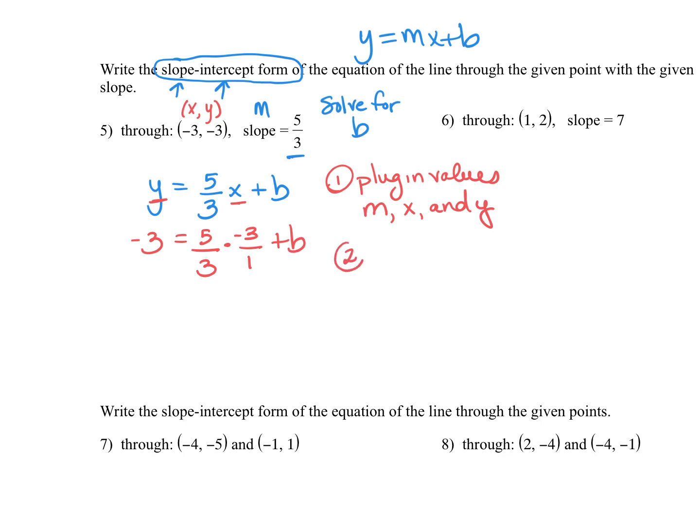Now to solve for b, the next thing I need to do is I need to multiply my m and my x value. When two variables are right next to each other in an equation, it means multiplication. And you'll notice the -3, I put over 1, because when we multiply fractions, we multiply straight across. So that -3 is a whole number I needed to turn into a fraction. So when I do that, I'm going to get 5 times -3 is -15, and 3 times 1 is 3.